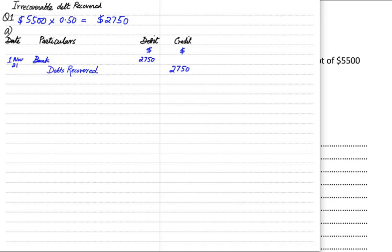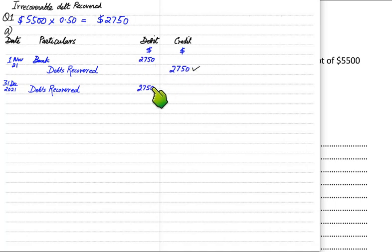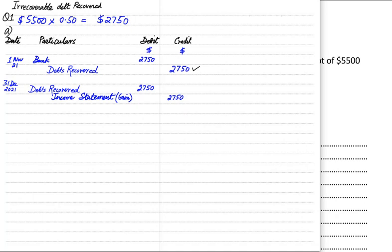Bank or cash is debited because money is coming into the business; we do not need to mention Mr. Aslam anywhere. Just as a bad debt expense account is closed at year-end and transferred to the income statement, debts recovered — being credit in nature as an income account — must also be closed at year-end. We debit the debts recovered account and credit the income statement, because it represents income, profit, or a gain.